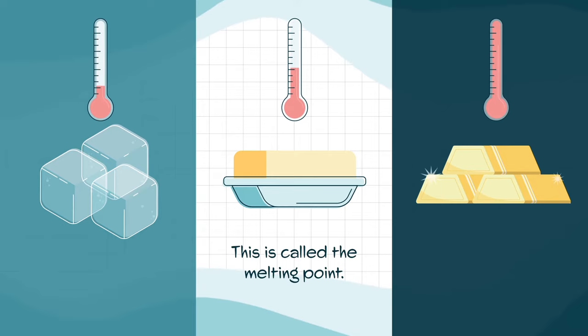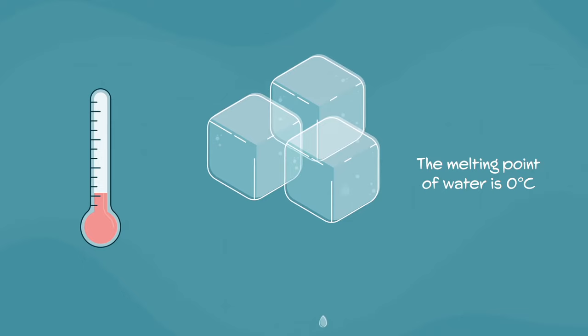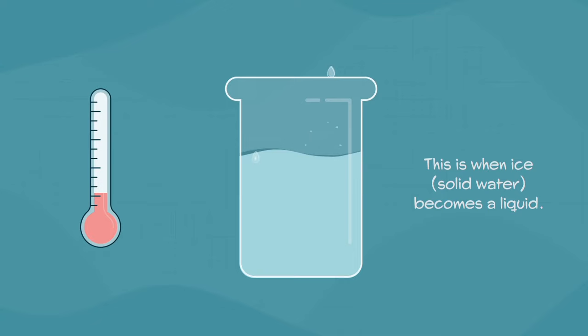The melting point of water is zero degrees celsius. This is when ice, solid water, becomes a liquid. At room temperature water is a liquid.